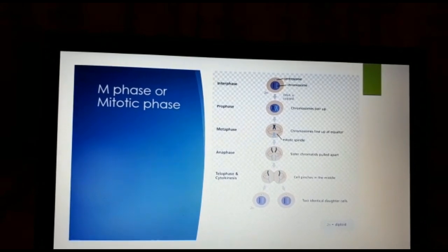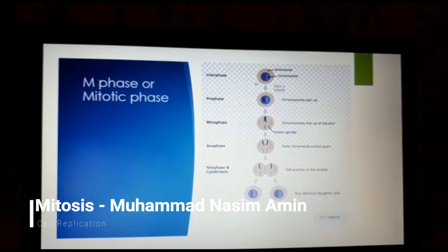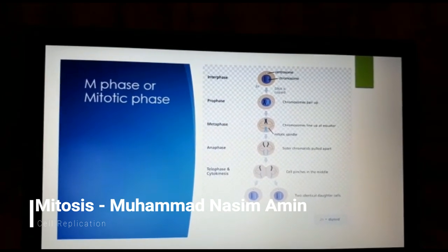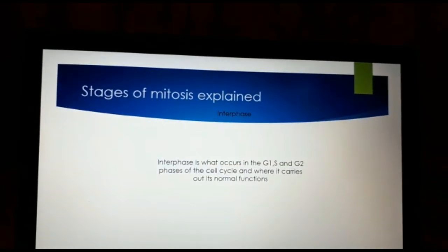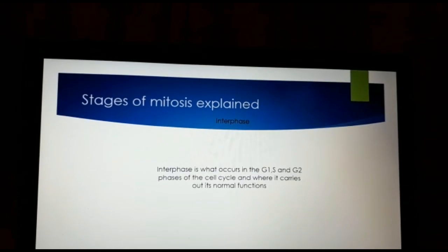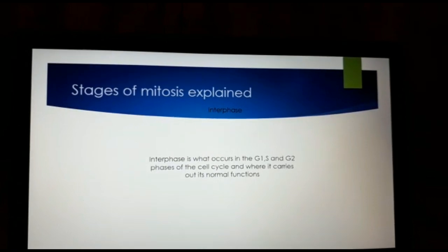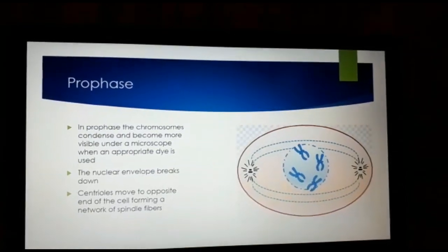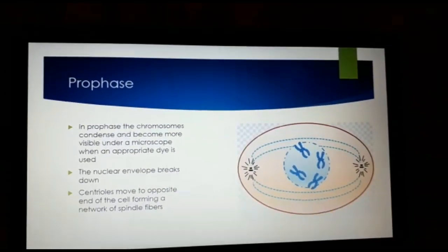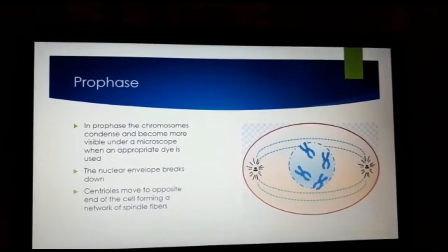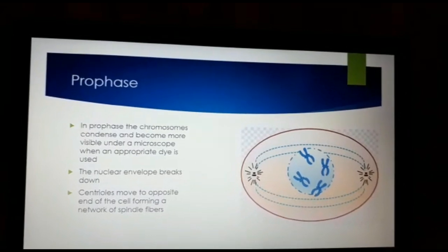I will be explaining the M phase or the mitotic phase of the cell cycle. This mitotic phase has five stages: interphase, prophase, metaphase, anaphase, telophase, and cytokinesis. In interphase, the DNA replicates, the organelles are also replicated, and the cell carries out its normal functions. In prophase, the chromosomes condense and become more visible under a microscope when an appropriate dye is used. The nuclear envelope breaks down and centrioles move to opposite ends of the cell, forming a network of spindle fibers.